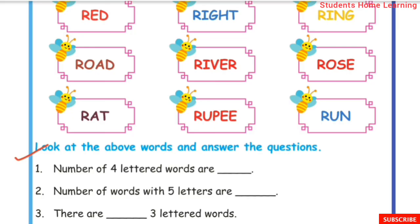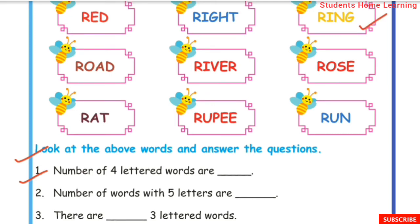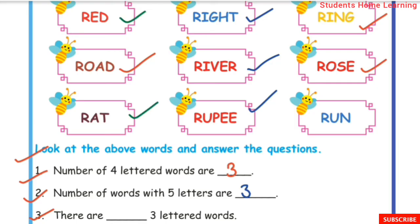Based on the words listed: First question — number of 4-lettered words: counting gives 3 four-lettered words. Second question — number of 5-lettered words: there are 3 five-lettered words. Third question — number of 3-lettered words: there are 3 three-lettered words.